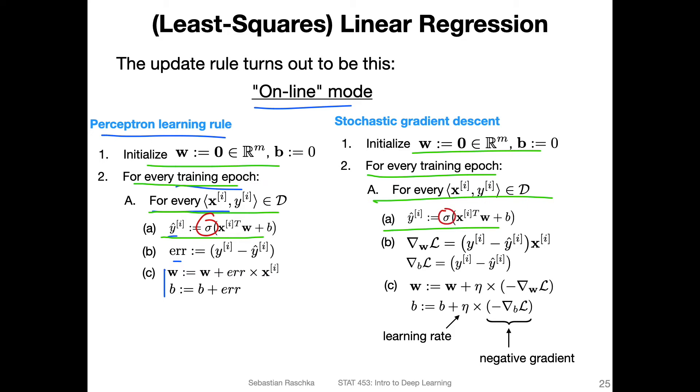And here, this would be an identity function in the case of linear regression. This is the net input. And they are computed exactly the same way. This function is an identity function in the case of linear regression and a threshold function in the case of the perceptron.